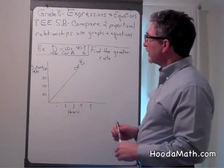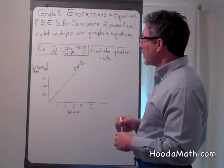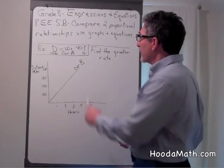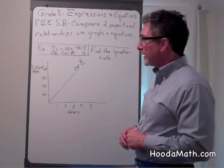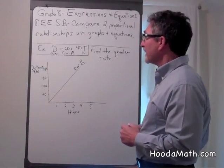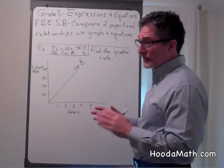60 is how far from home a person is if he didn't drive at all in zero time. So that is the y-intercept. It is not the slope.